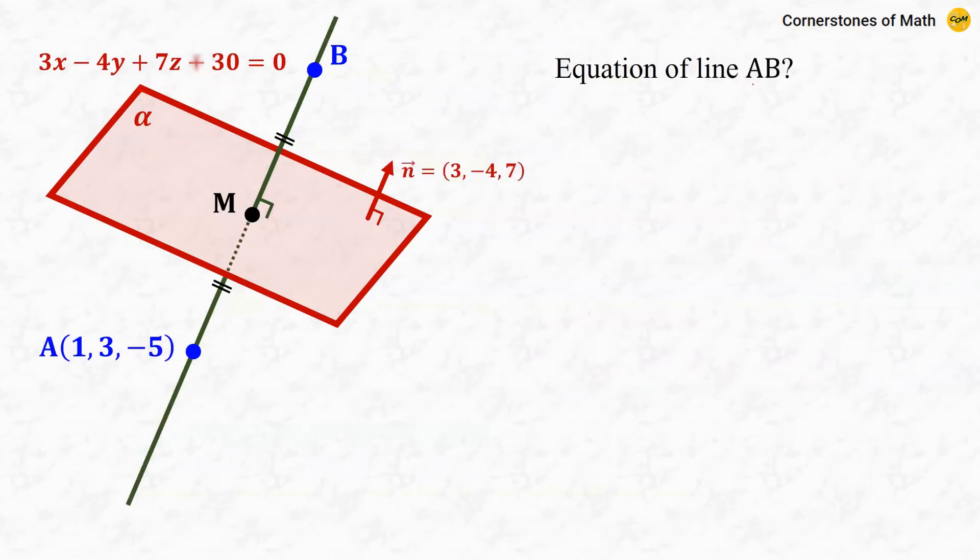Now, let us find the equation of line AB. Since both vector N and AB are perpendicular to plane alpha, line AB and vector N are parallel.